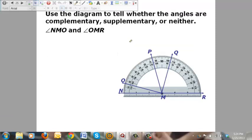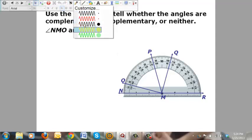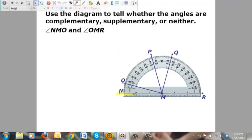Let's try another one here. This one, angle NMO. So, let's take and get a highlighter going here. Angle NMO. That's that one. And angle OMR. So, let's get the green highlighter going. Angle OMR.